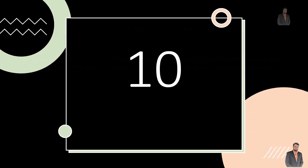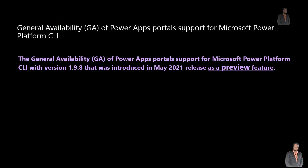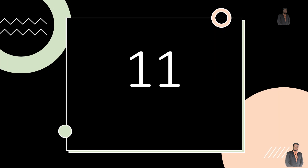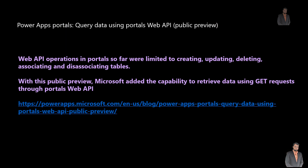The tenth important announcement is around the General Availability of Power Apps Portal Support for Microsoft Power Platform CLI. Power Platform CLI version 1.9.8 was introduced in May 2021 as a public preview, and now this is generally available for Power Apps Portal Support.